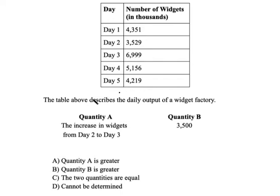Alright, so let's take a look at this here. We have this table that shows the daily output of a widget factory. And quantity A is the increase in widgets from day 2 to day 3. And you might look at this and say, okay, well, day 2 to day 3, we have 6,999 and 3,529. If I subtract those, the difference looks to be 3,470.